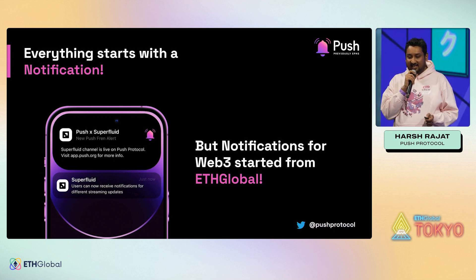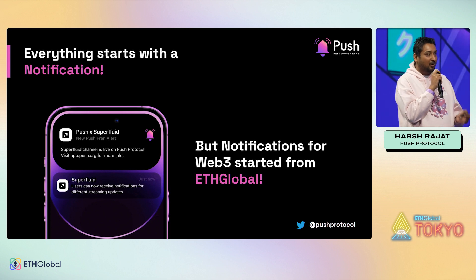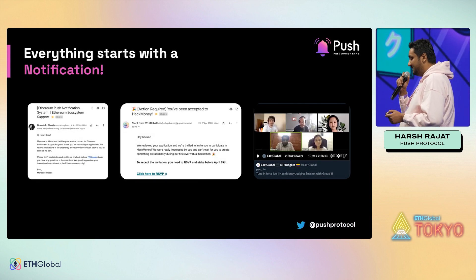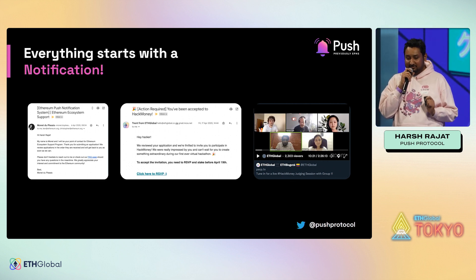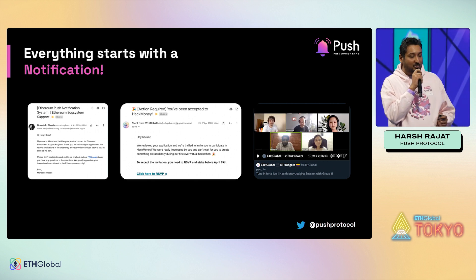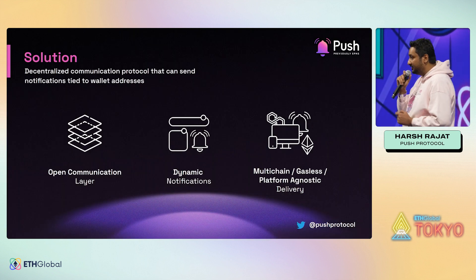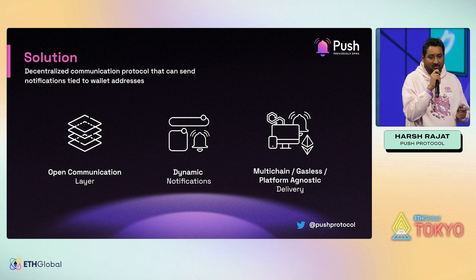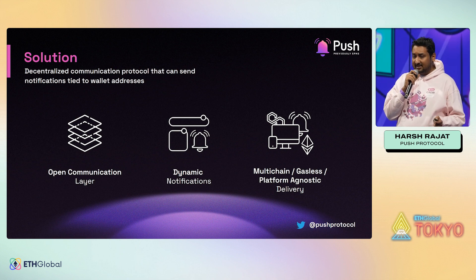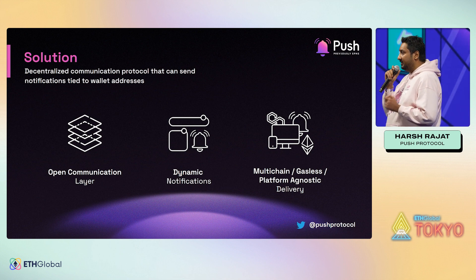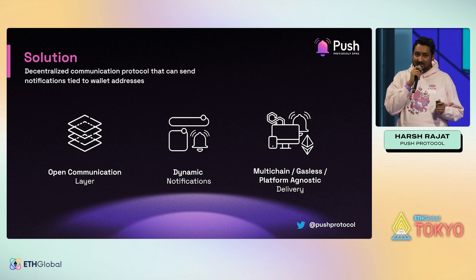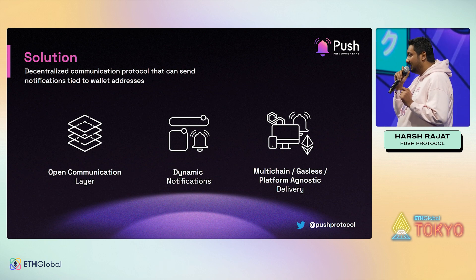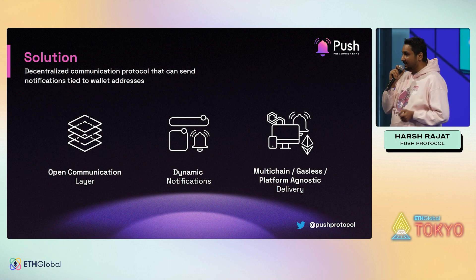We're excited to say that notifications for Web3 were started by Push at ETHGlobal back in 2020. We started by writing to the Ethereum Foundation, got accepted to Hack Money, and then built the solution: a decentralized communication protocol that enabled any dapp, any smart contract, any protocol — even Web2 services — to send on-chain or off-chain notifications tied to a user's wallet address. Because this was done through an open communication layer, crypto dapps and wallets can tap into the network and show these communications securely.